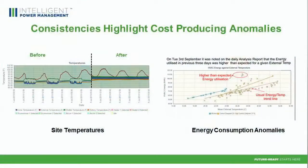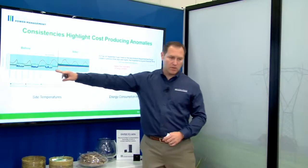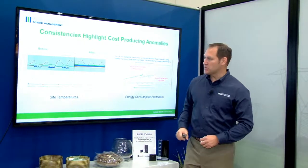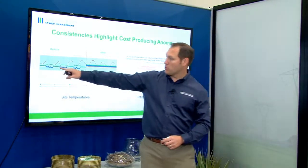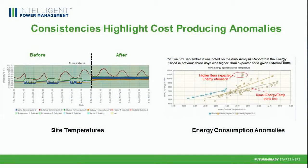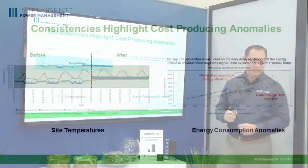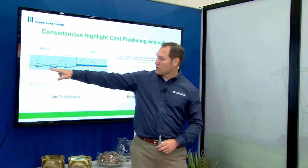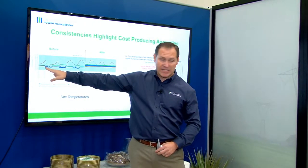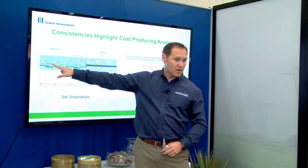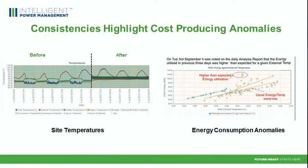This is a particular site of one of the customers we monitor today. This is site temperature before and after we install the IPM solution. You can see the red is outdoor temperature; the blue, green, and orange are different temperature set points in this particular site. For a block of about 12 hours a day — in this case from noon until midnight — there's a 10-degree difference in temperature between the two temperature set points in this shelter. The next day it does the same thing, and the next day it does the same thing.